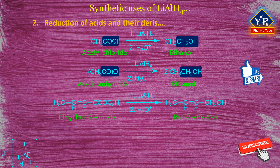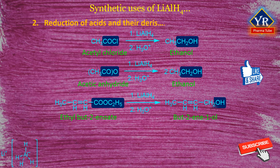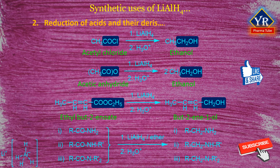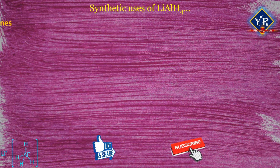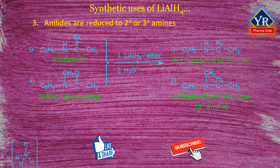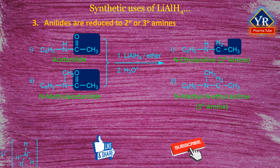Esters also form primary alcohols using lithium aluminium hydride. For example, ethyl but-2-enoate, an ester, can be converted to but-2-en-1-ol, which is a primary alcohol. Unsubstituted amides give primary amines while substituted amides give secondary or tertiary amines. Anhydrides such as acetonylide and N-methyl acetonylide are converted to the corresponding secondary and tertiary amine respectively.